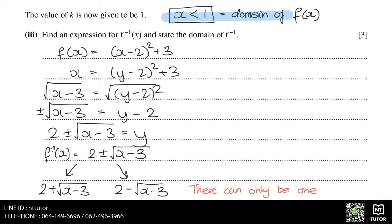Since the domain of f is x less than 1, we can substitute in a random coordinate within the domain, for example, x equals 0. If we substitute 0 into the function, it gives us 7.